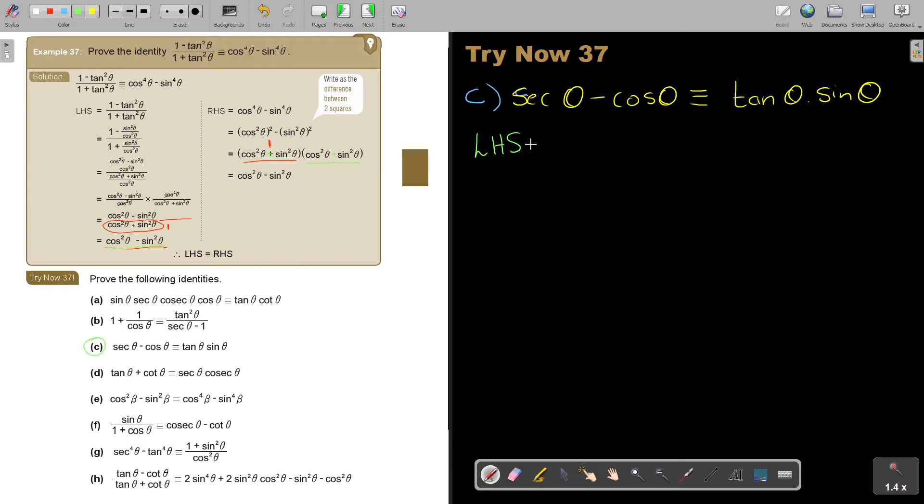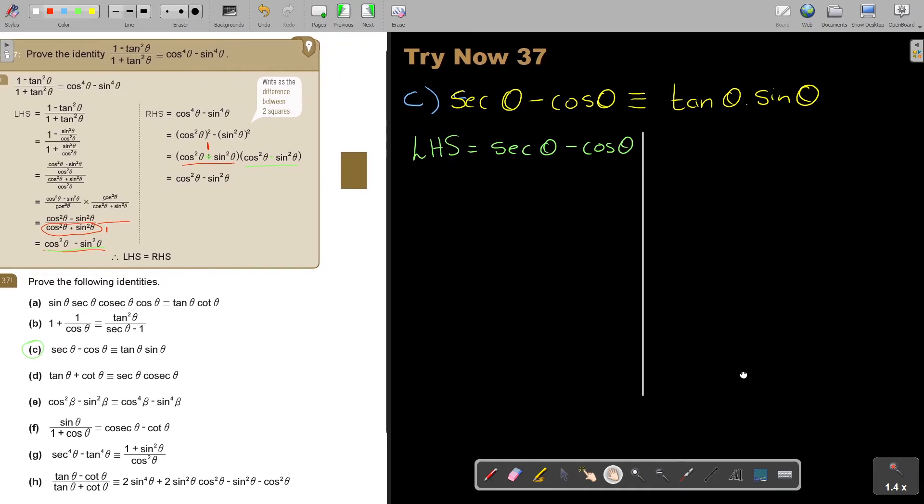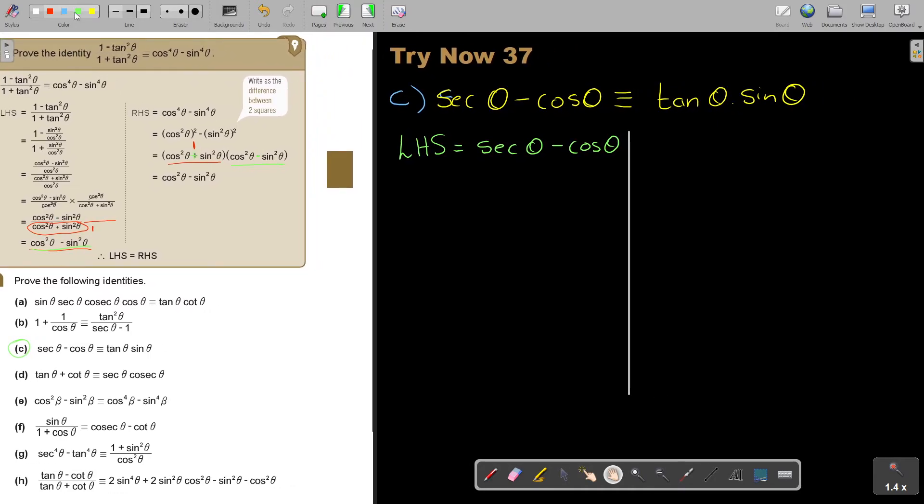So, take everything to sin and cos, it always works. But let's first write it, sec theta minus cos theta. And in this case, I'm going to move it a little bit, then I get it correct. I want to do both on the same side. Just for explanation. You can do it under each other. The right-hand side is tan theta sin theta. Let's start.